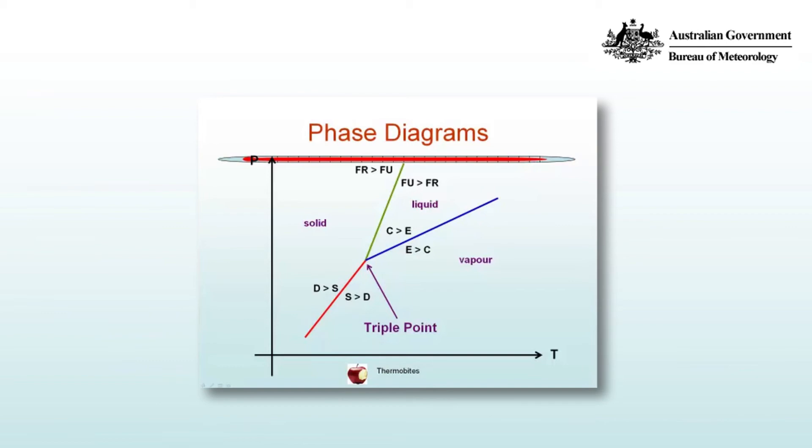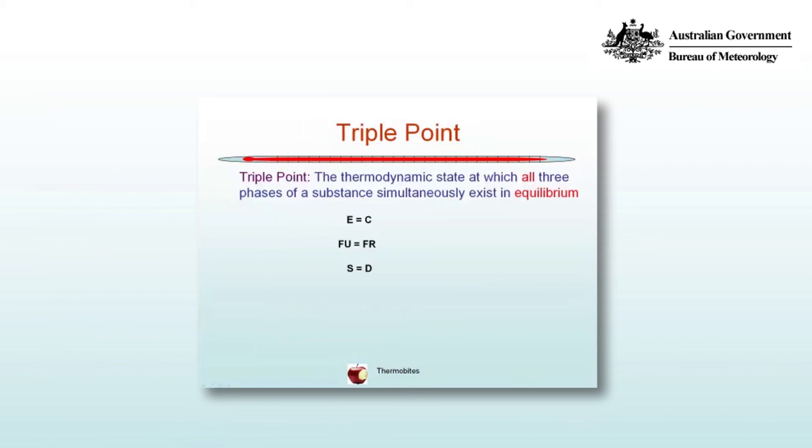So the lines on the diagram represent equilibrium. But what about the point where all three lines converge? That's referred to as the triple point. The triple point is the thermodynamic state at which all three phases of a substance simultaneously exist in equilibrium.